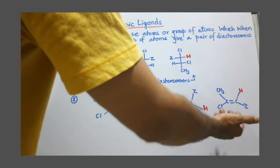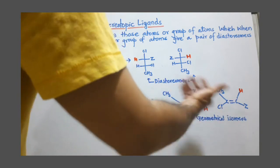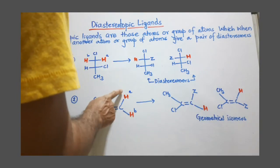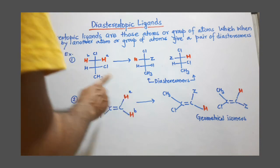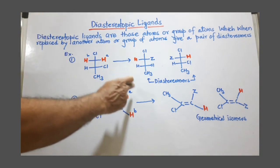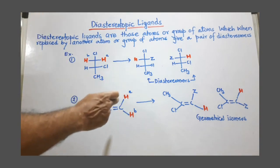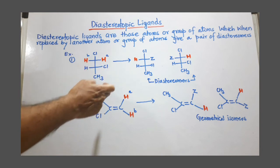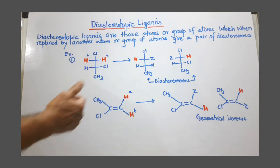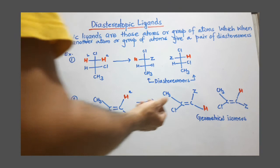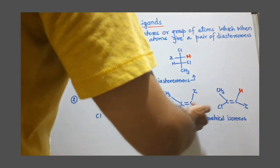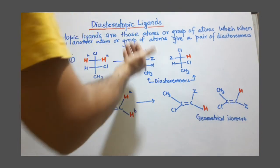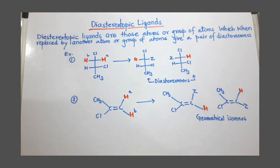These two resulting structures are geometrical isomers — they are E and Z isomers. Geometrical isomers are diastereomers, so these two protons are diastereotopic ligands. Therefore, they are not stereochemically equivalent; they are stereochemically different protons and are called diastereotopic ligands.